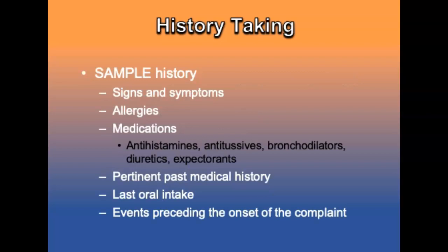Use the mnemonic SAMPLE to obtain the history of present illness and medical history. S is signs and symptoms; A is allergies; M is medications — review prescribed and over-the-counter medicines; P is pertinent past medical history — ask if the patient feels better or worse than last time; L is last oral intake; E is events preceding the onset of the complaint — what has the patient already tried and did it have any effect?